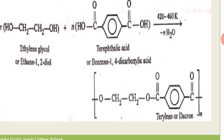Water is eliminated; the chain continues: -O-CH₂-CH₂-, water removed, -C double bond O-, benzene ring, -C double bond O-, chain continues. This polymer is known as Terylene or Dacron.